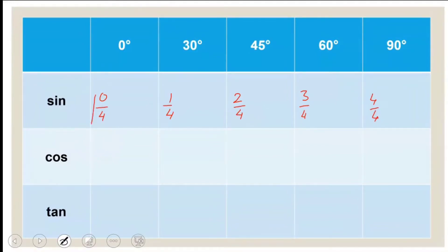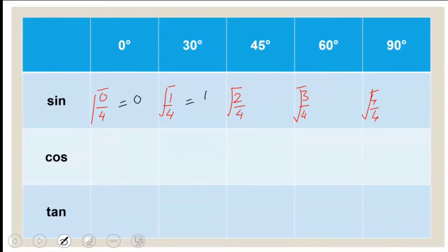Then find the square root of each. Square root of 0/4: square root of 0 is 0, so we get 0. Square root of 1/4: square root of 1 is 1 and square root of 4 is 2, so we get 1/2. Square root of 2/4: we simplify 2/4 to 1/2, square root of 1 is 1 and square root of 2 is √2, so we get 1/√2.